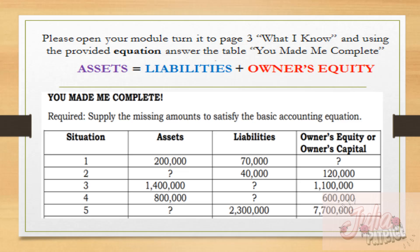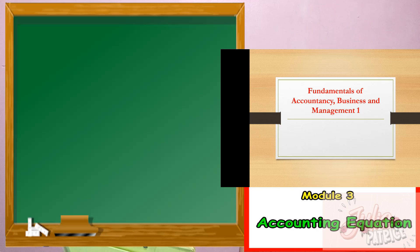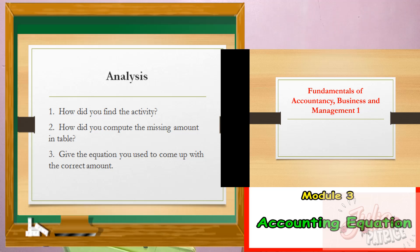For situation one, we have assets 200,000 and liabilities 70,000; owner's equity or owner's capital we have to find. Situation number two: assets missing, liabilities equals 40,000, and owner's equity or owner's capital is 120,000, and so on and so forth. Please pause this video while you are answering. Before we check your answers, I want you to continue answering the following questions. You may pause this video again while you are answering.